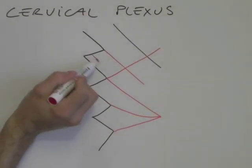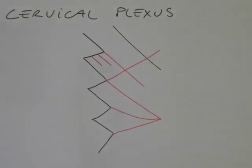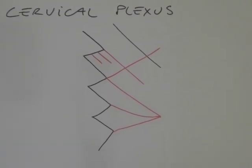And now we can add the collateral branches. So we have two here, and I'm using the red pen because this is the anterior part of the plexus, so the motor part. I can use the green pen for the posterior one, so the sensory one.